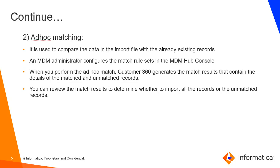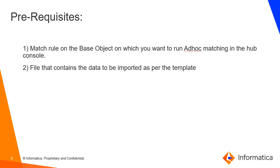When we click on next we go to ad-hoc matching. Here it is used to compare the data in the import file with the already existing records. This is done because we set a match rule for the particular business entity in the hub console. When we perform the ad-hoc match, Customer 360 generates the match results that contain the result of the match and the unmatched records. You can review the match results to determine whether to import all the records or the unmatched records.